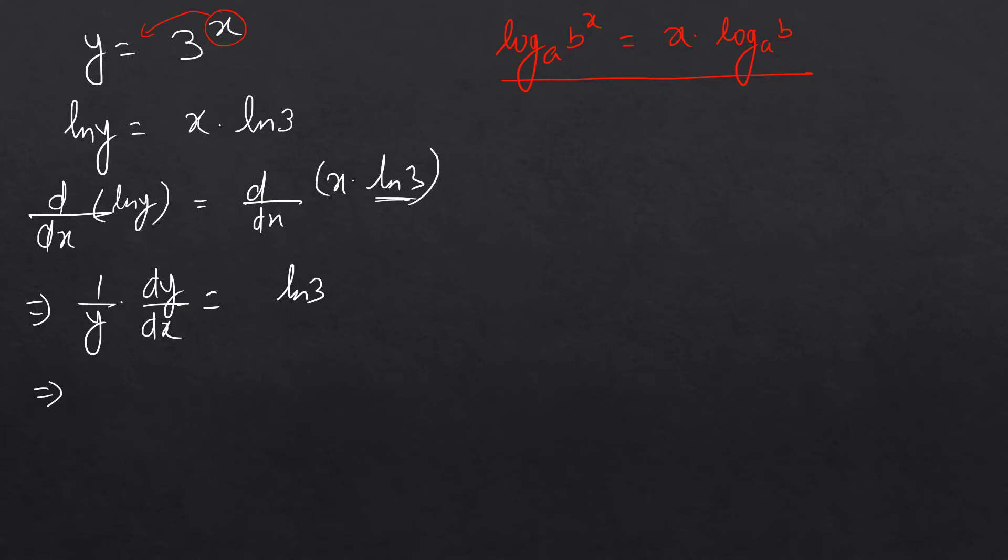Next step would be dy over dx is equal to y times ln 3. It implies that dy over dx is equal to 3 to the power x times ln 3. So we got our answer.